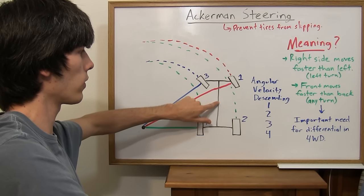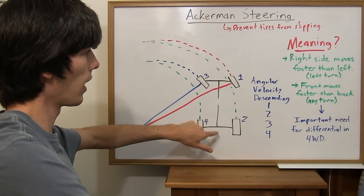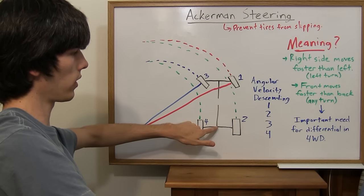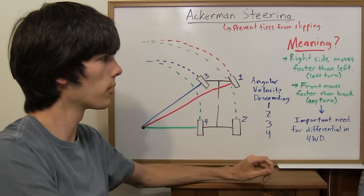If you put in a center differential right there, then that would allow these tires to rotate at a different rate than these tires. And then you put in a differential at the front and a differential at the back, and that would allow each of these two tires to rotate at different rates.